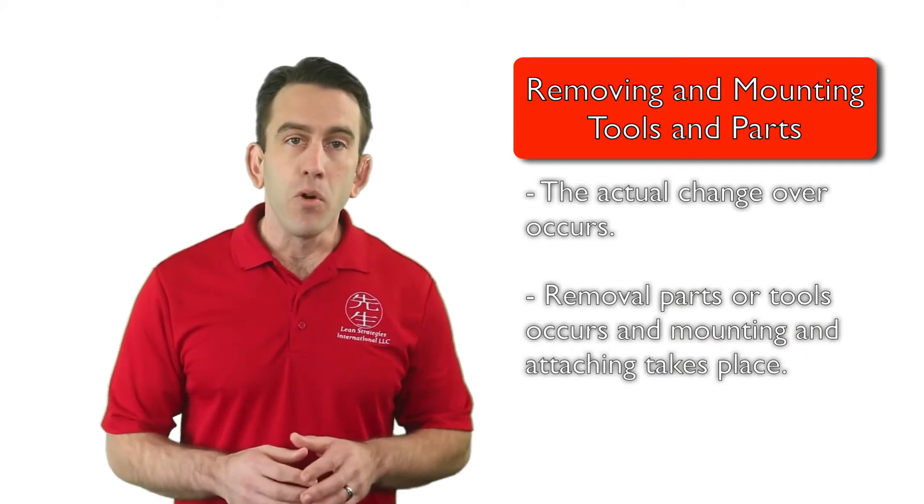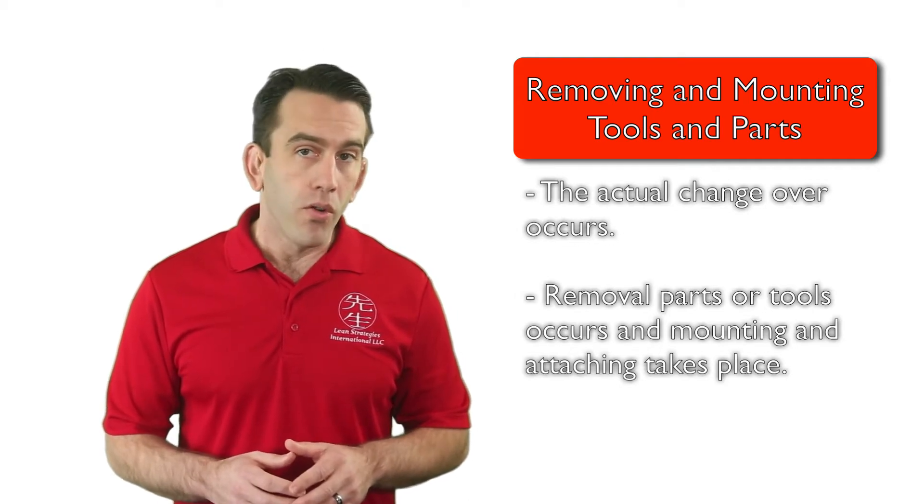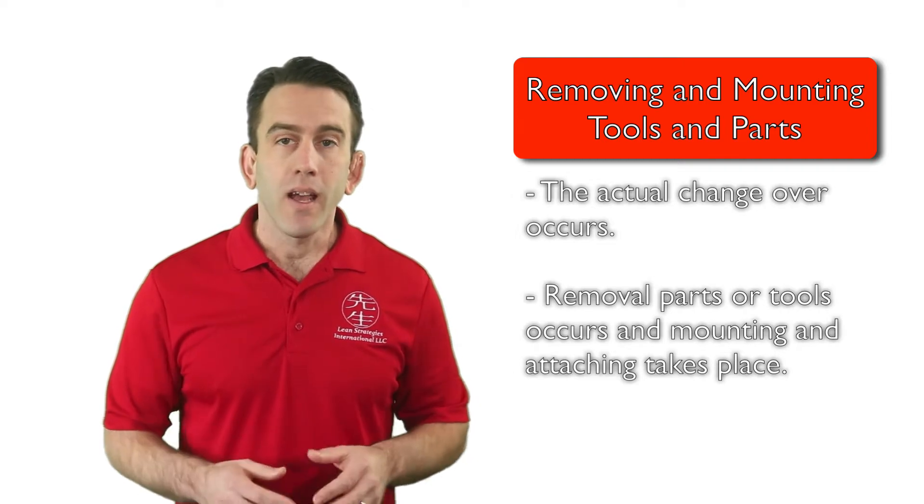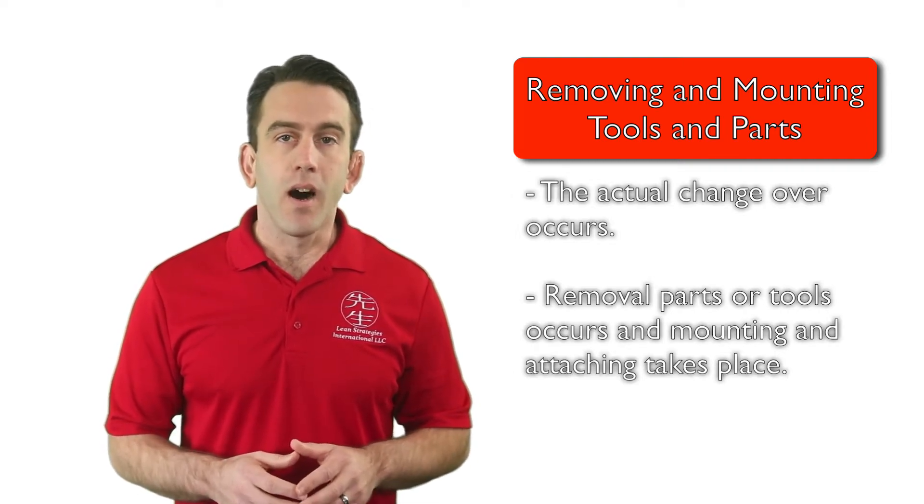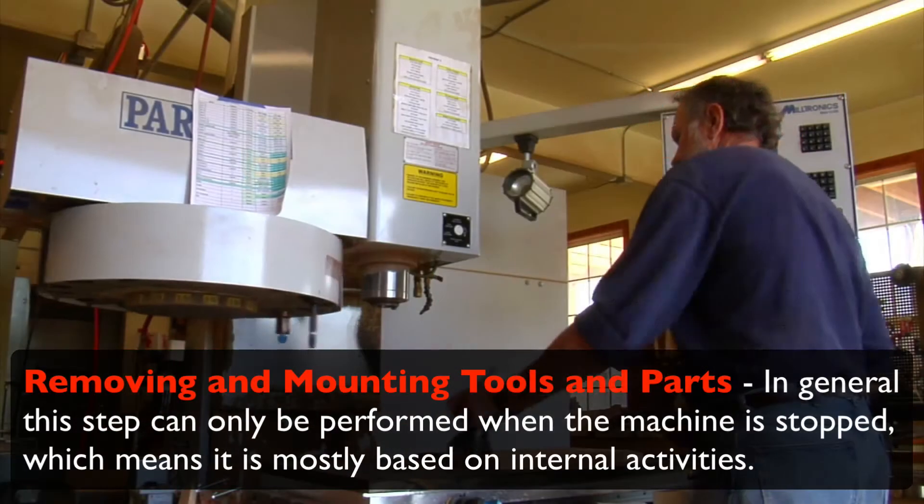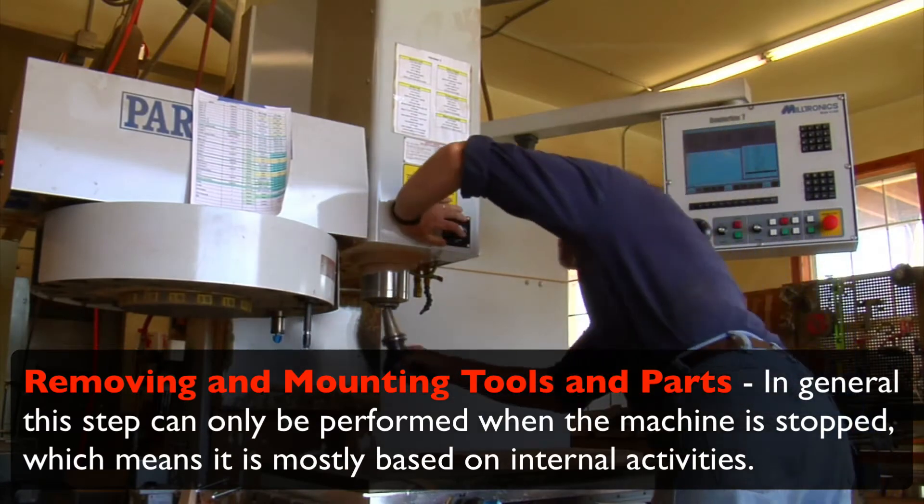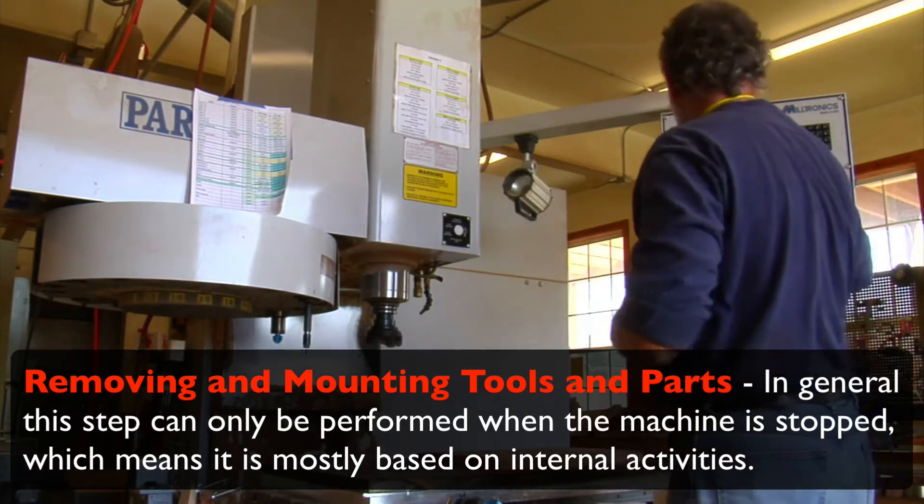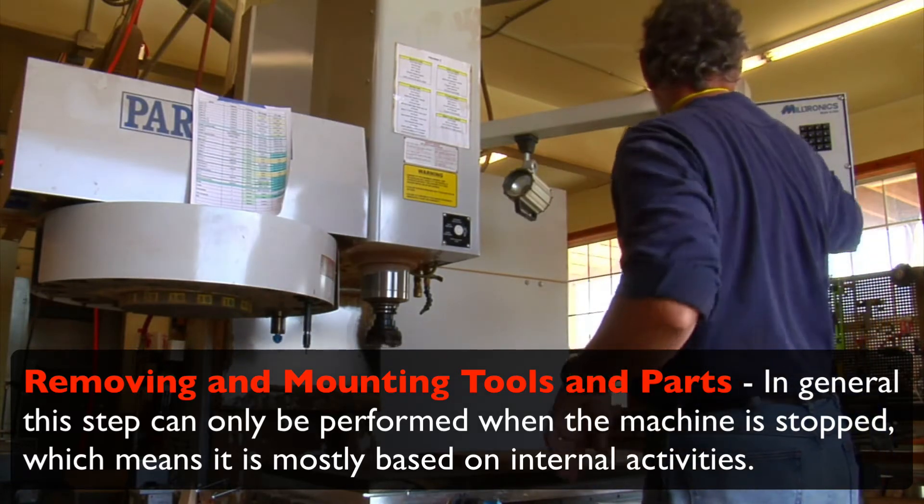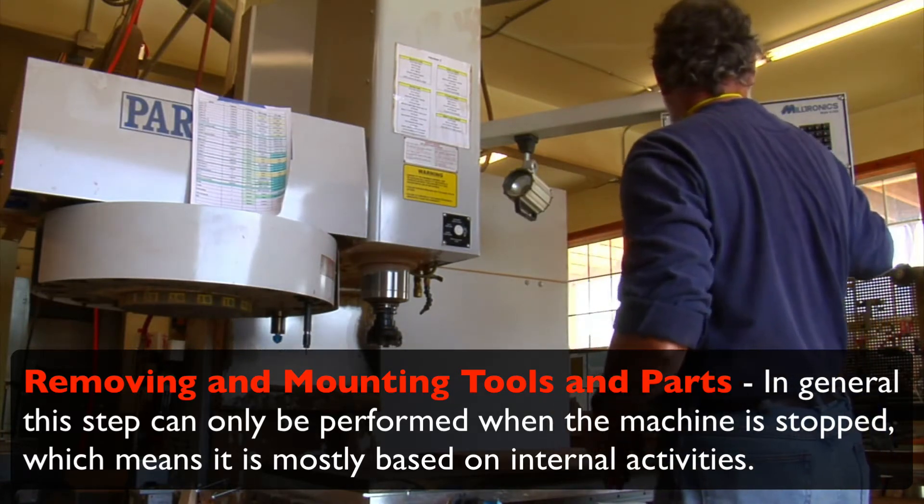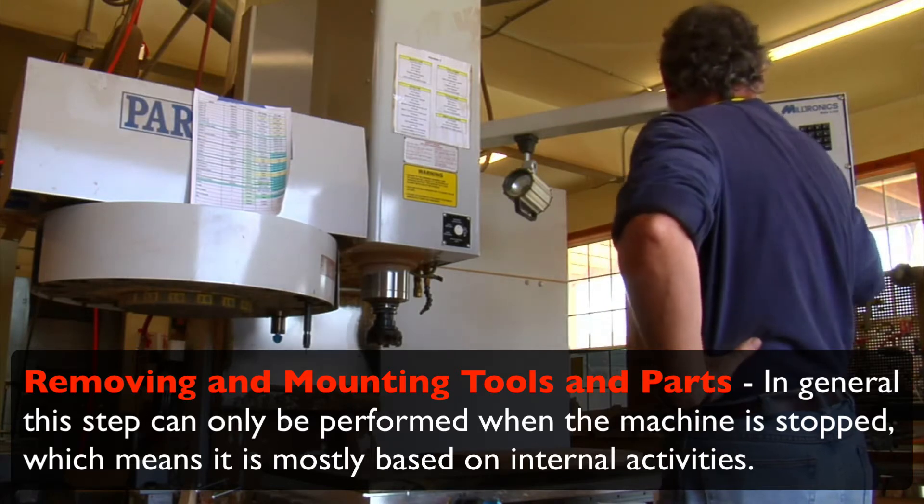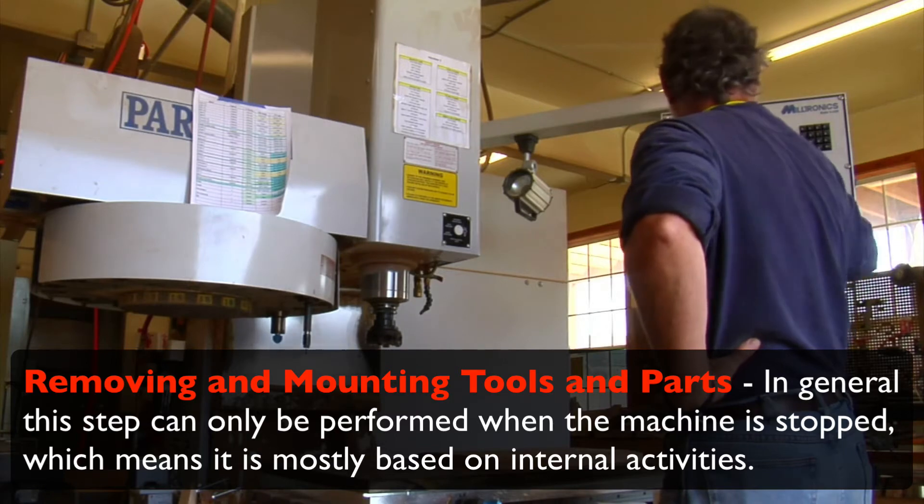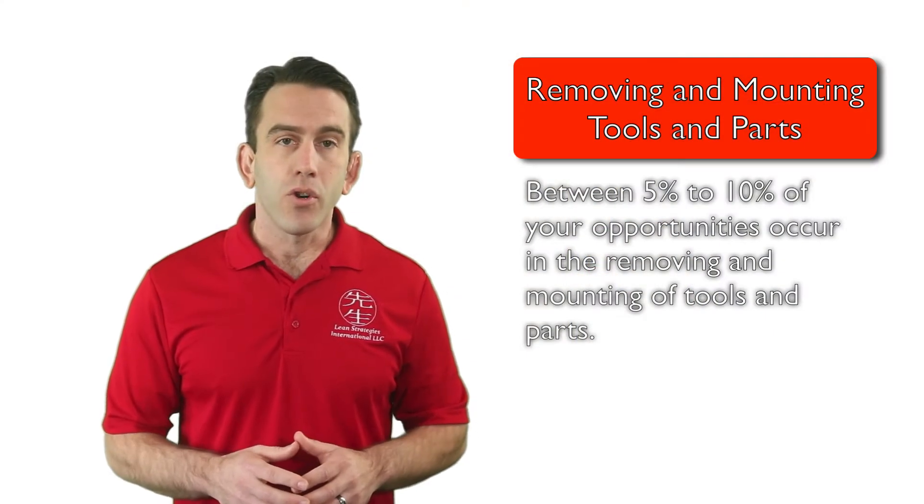In the second phase of traditional setup, the actual changeover occurs. This is when the removal of any parts or tools from the first batch or lot occurs, and the mounting and attaching of the second lot takes place. In general, this step can only be performed when the machine is stopped, which means it is mostly based on internal activities. This does not mean that improvements cannot take place, but generally they have more to do with training, tooling, and standardization of activities.